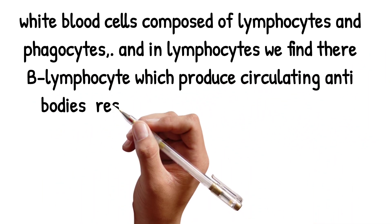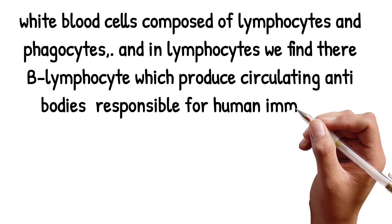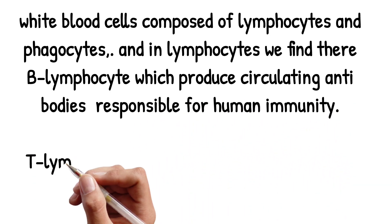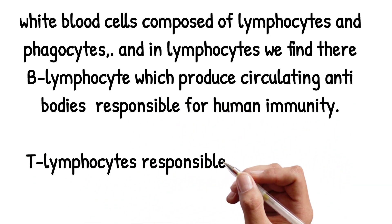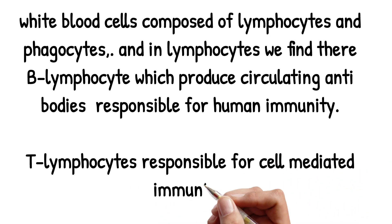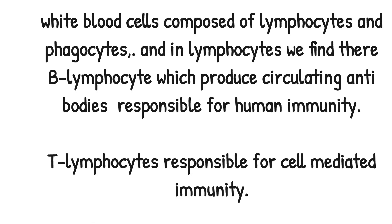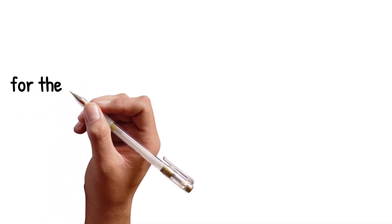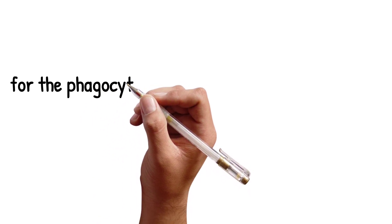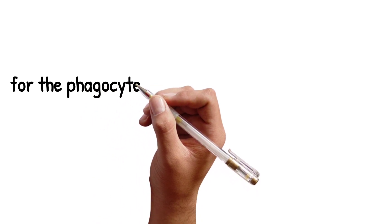Starting from the lymphocytes: lymphocytes are composed of two parts, B lymphocytes and T lymphocytes. B lymphocytes produce antibodies, and T lymphocytes are responsible for cell-mediated immunity. As for phagocytes, they are another major component of white blood cells.